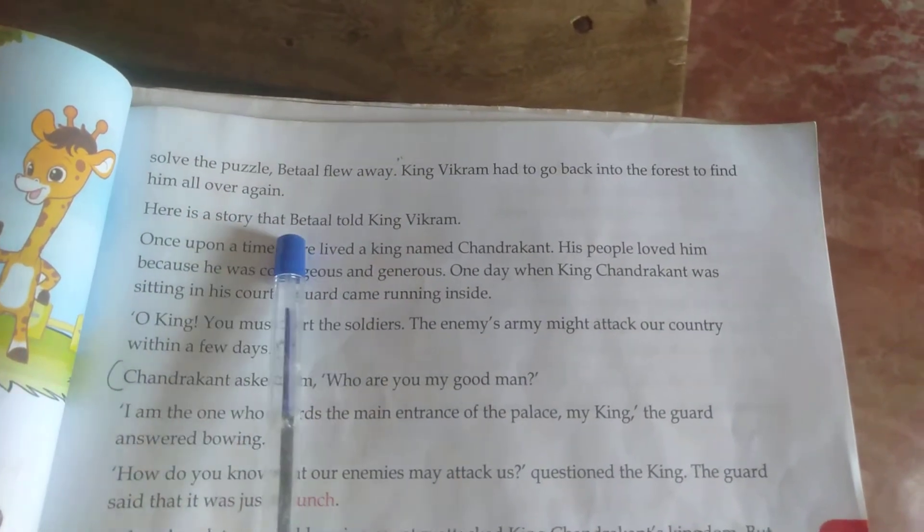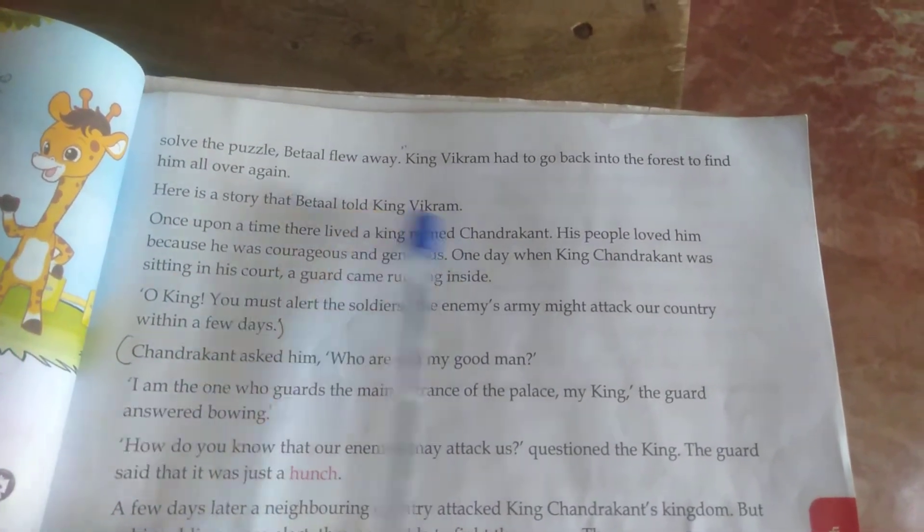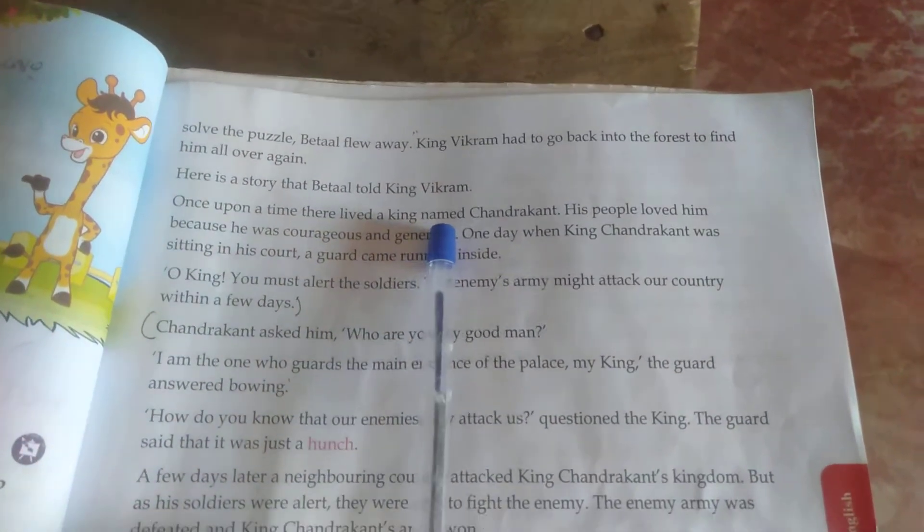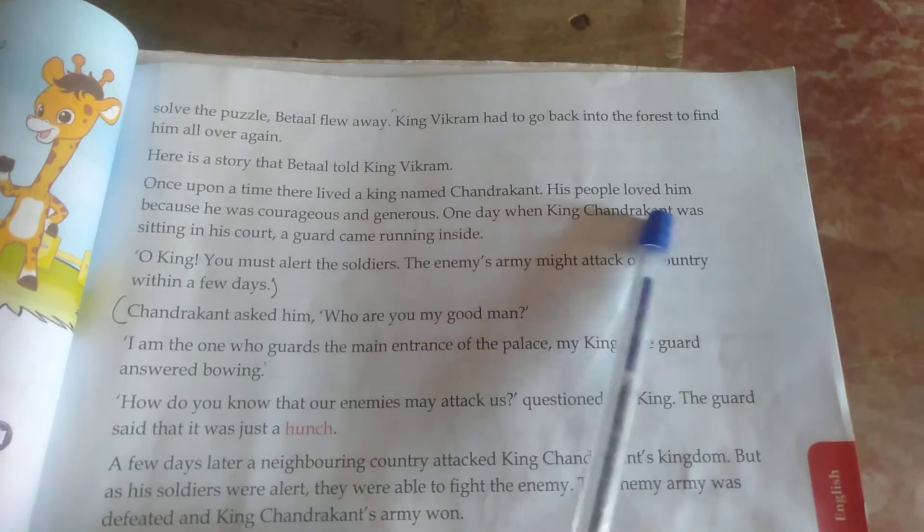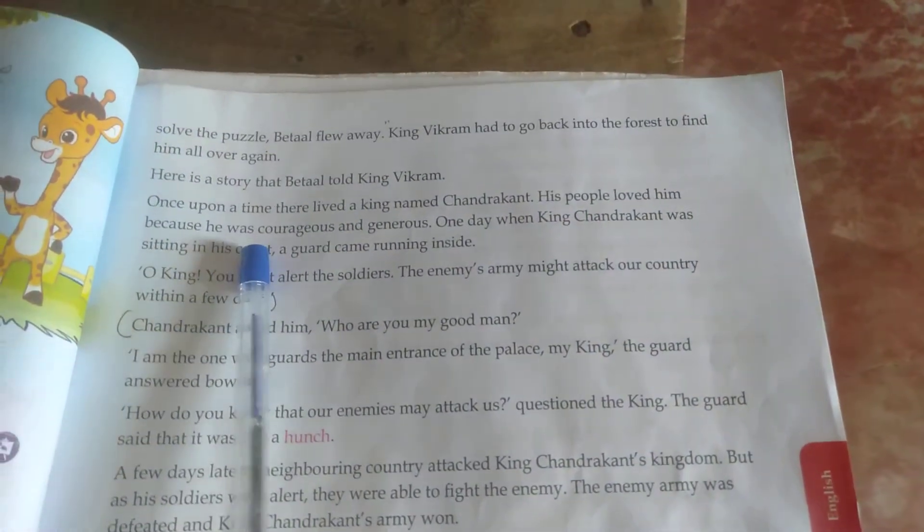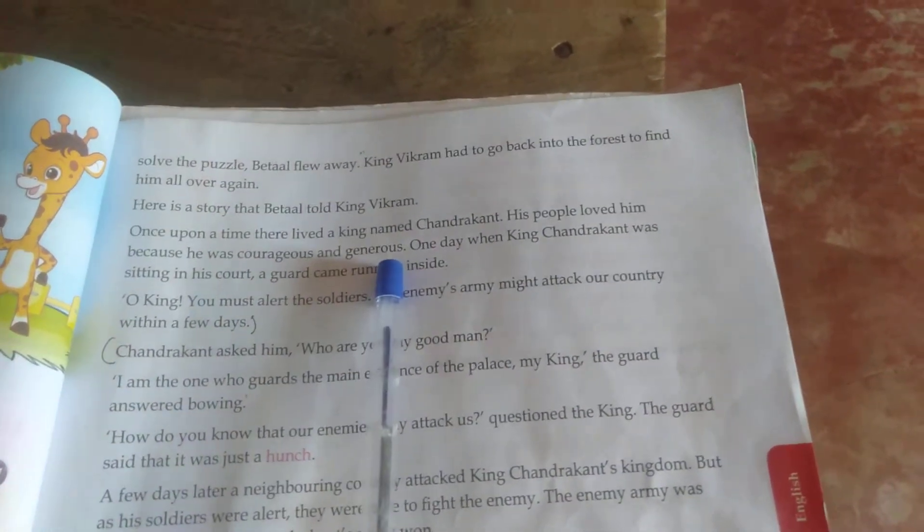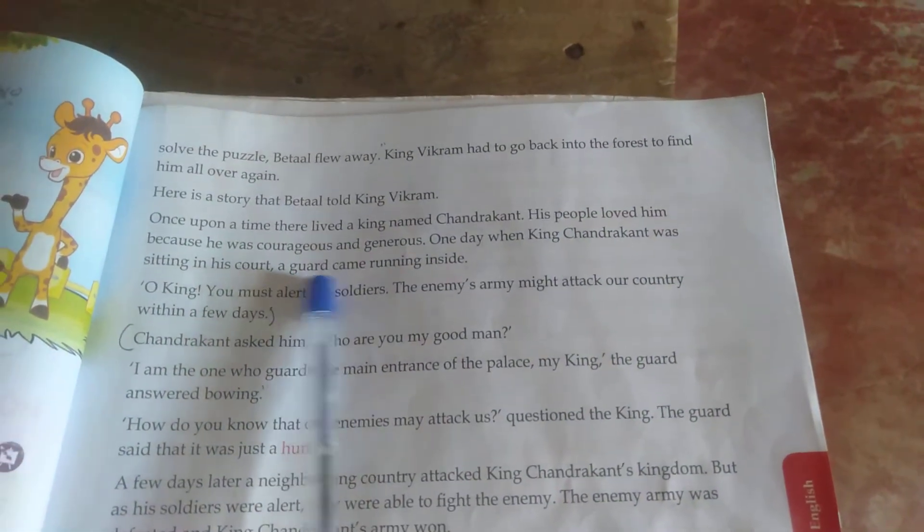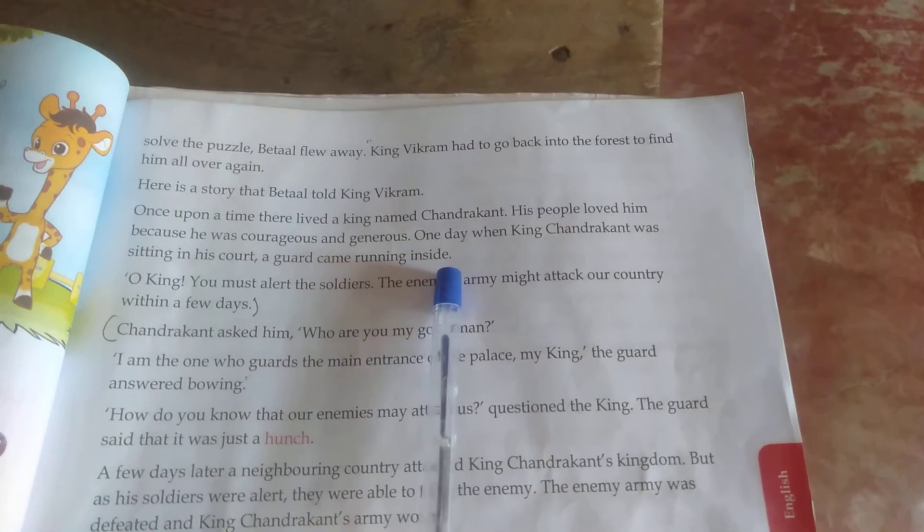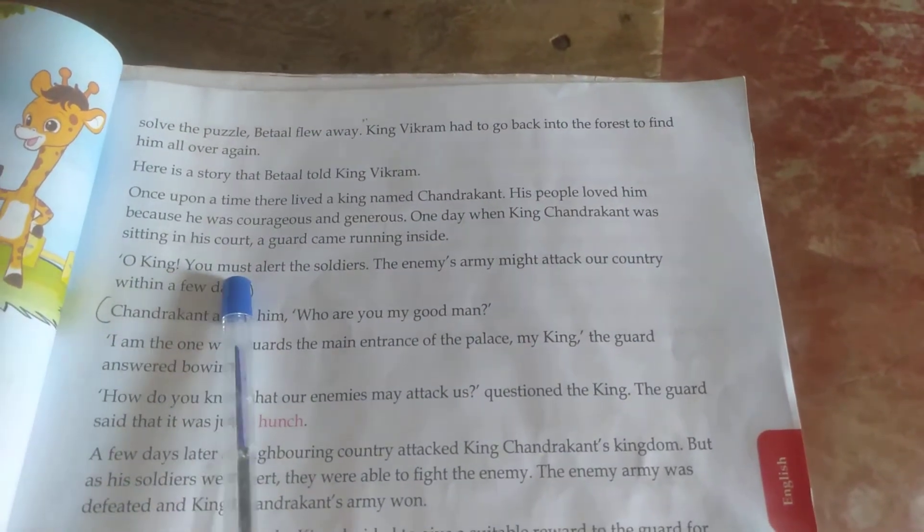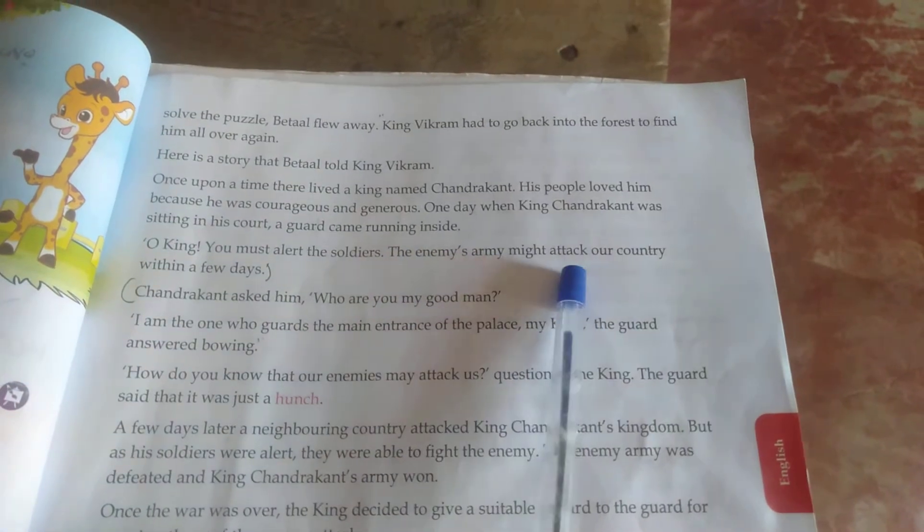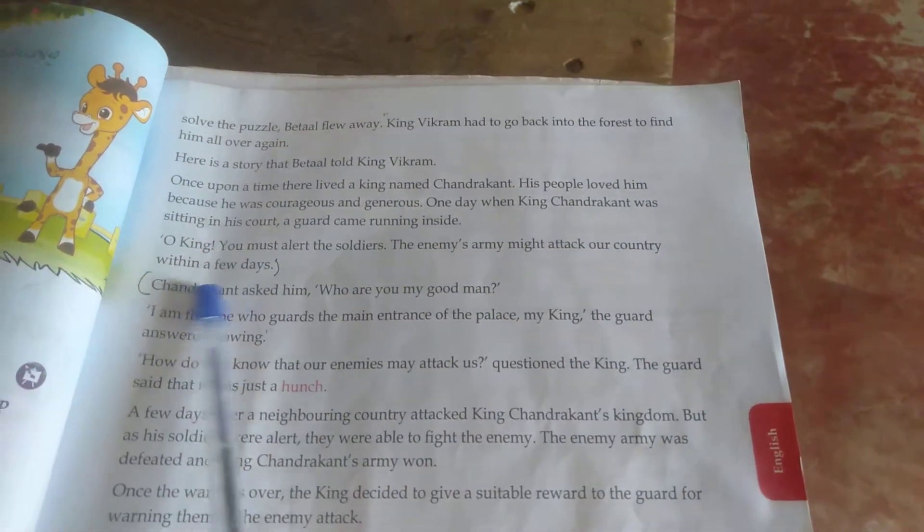King Vikram had to go back into the forest to find him all over again. Here is a story that Betal told King Vikram. Once upon a time, there lived a king named Chandrakhan. His people loved him because he was courageous and generous. One day when King Chandrakhan was sitting in his fort, a god came running inside.